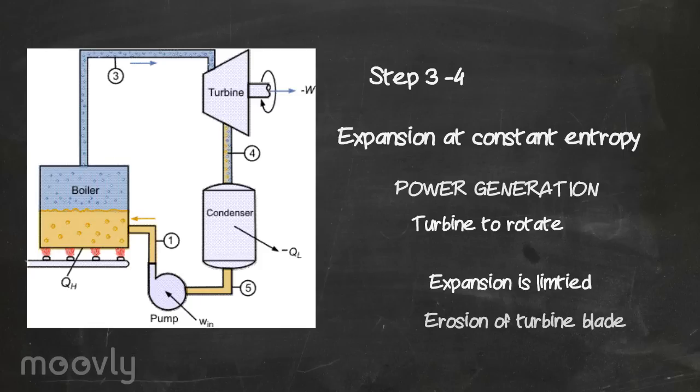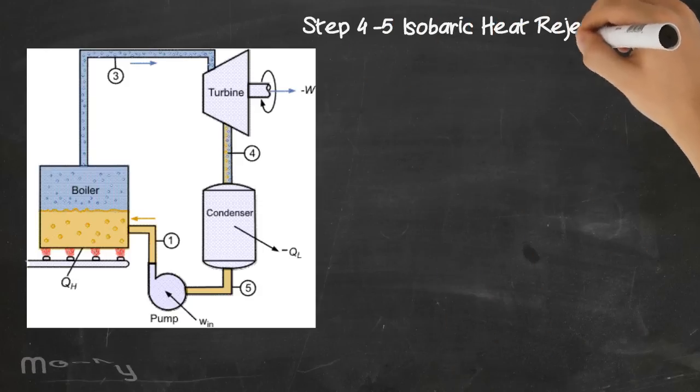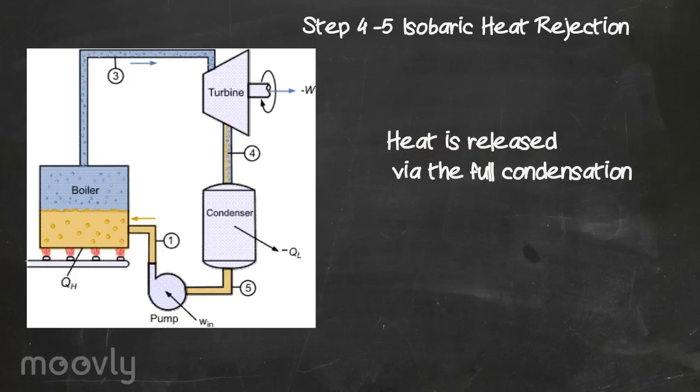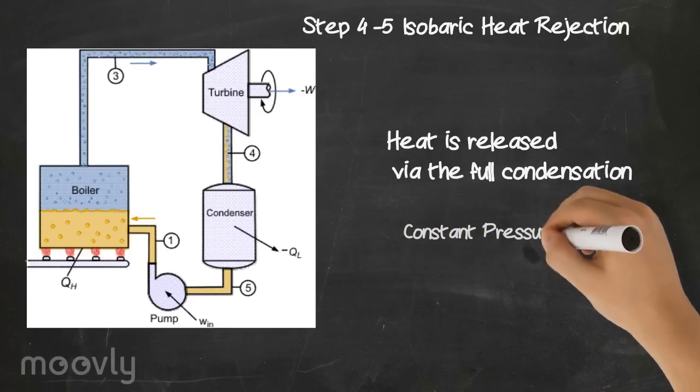In step 4 to 5, this is the isobaric heat rejection. Heat is released by the full condensation of the liquid vapor medium, isobaric, until the substance reaches a saturated liquid. Here in the pH diagram, pressure is constant.